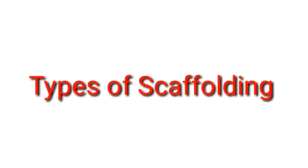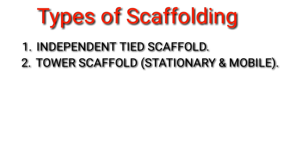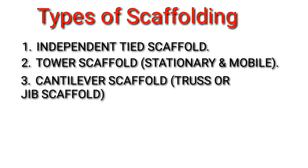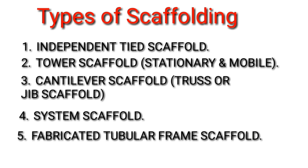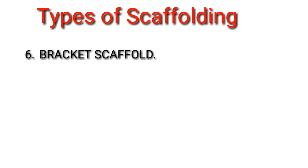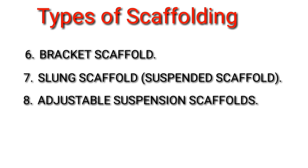Types of scaffolding: 1. Independent tied scaffold. 2. Tower scaffold — stationary or mobile. 3. Cantilever scaffold, truss or jib scaffold. 4. System scaffold. 5. Fabricated tubular frame scaffold. 6. Bracket scaffold. 7. Slung scaffold or suspended scaffold. 8. Adjustable suspension scaffolds. 9. Crawling board or chicken ladders.